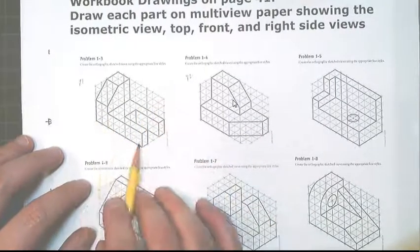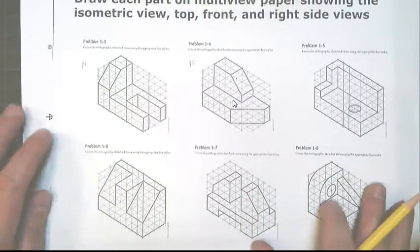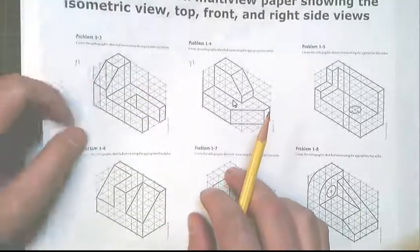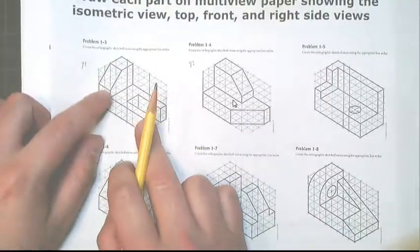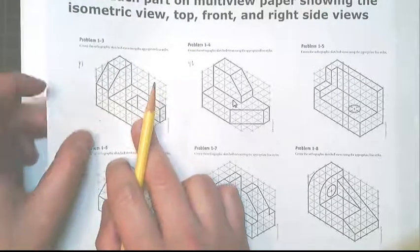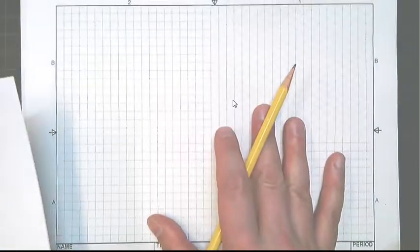The isometric gives us the information about the size of the object, so what we need to do is first, since I have the isometric already in front of me, I can start by making the multi-view drawing, but this is going to eventually be drawn on your orthographic projection paper, your multi-view paper.